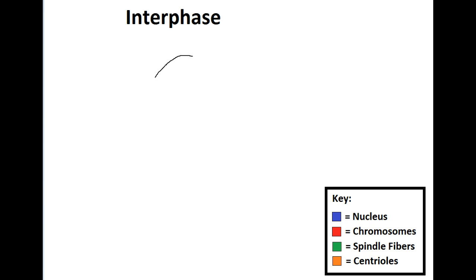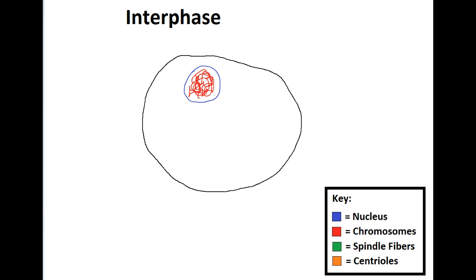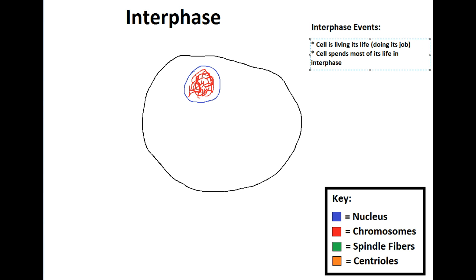Now we're going to talk about the phases of mitosis, starting with interphase, which isn't actually part of mitosis — it's just where the cell spends most of its time. I'm drawing a cell here in interphase: you can see the cell, the nucleus, which is visible, and the chromosomes inside. In this case the chromosomes aren't really visible — they're not thickened. They are almost in that unwound, ball-of-string state called chromatin. In interphase, the cell is living its life, doing its job, divided into G1, S, and G2.